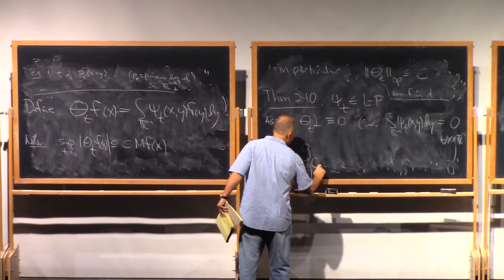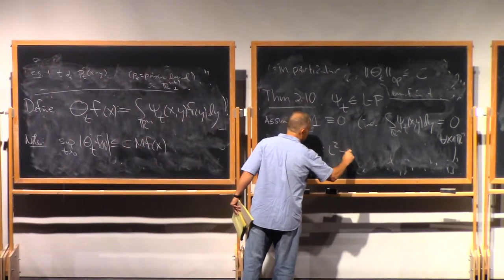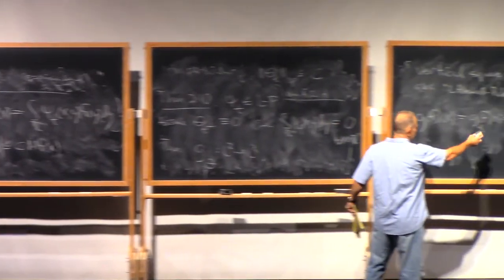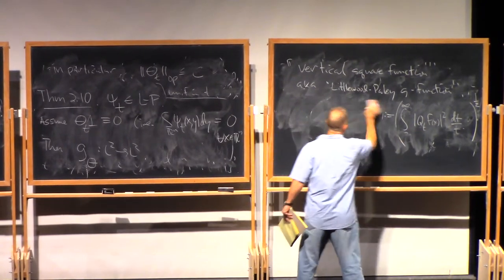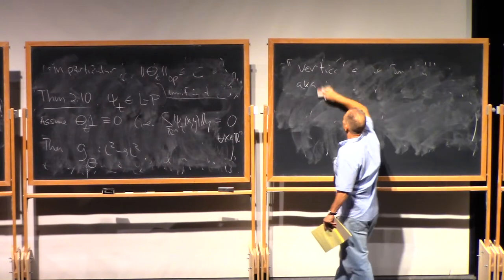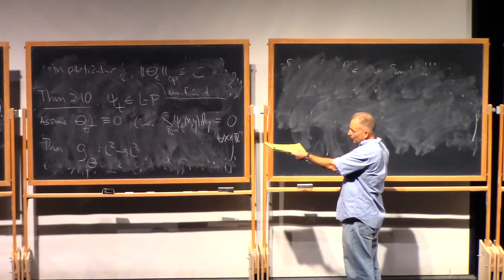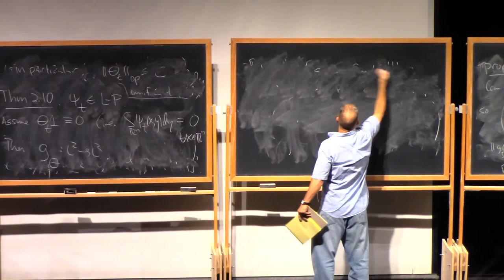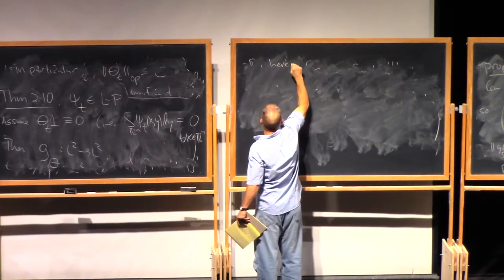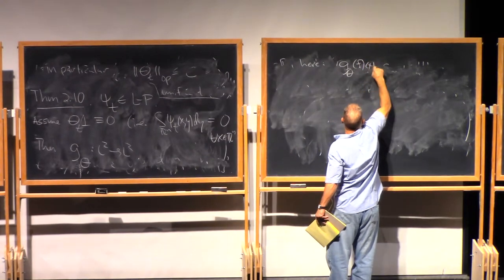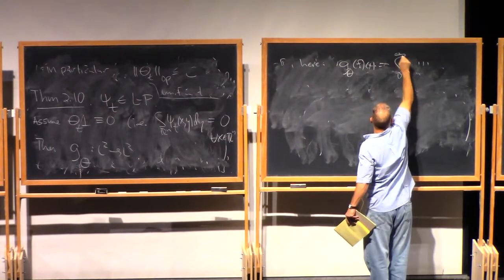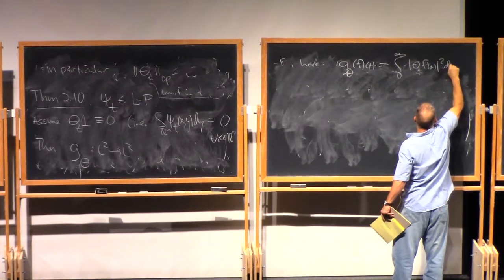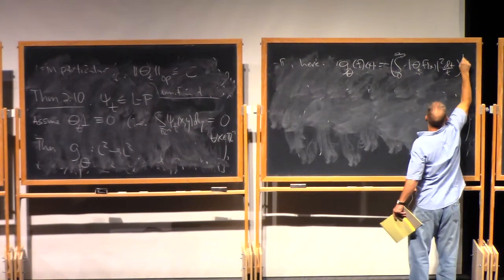All right. Then in that case, the Littlewood-Paley G function associated to theta, and I'll write it out explicitly in a moment, is bounded in L2. So G_theta just means, well, it's this thing but with Q_t replaced by theta_t. And of course, with the constants in the L2 bound depending only on dimension and these Littlewood-Paley kernel conditions.